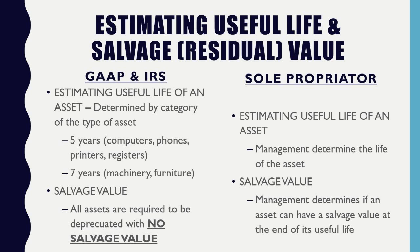Anything with technology — like computers — can last at least five years. Electronics generally have a maximum life of about five years. Anything beyond that, such as large machinery, trucks, and furniture, typically has an estimated useful life of seven years. These are already predetermined by GAAP and the IRS.